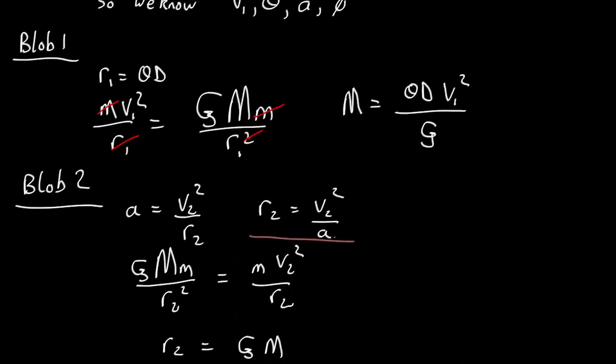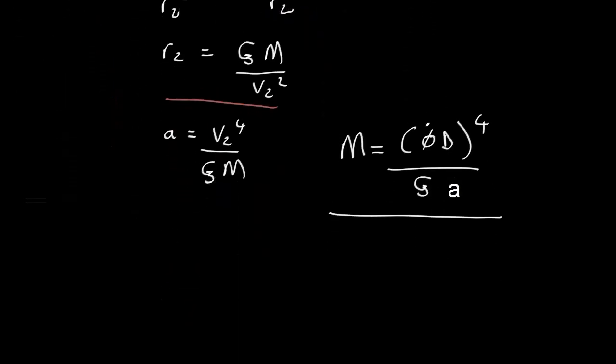So what we can do is set them equal to each other, so we get that theta d v1 squared over G, so we've got from blob 1, is equal to phi dot to the fourth d to the fourth over G times acceleration. So the Gs cancel, one of the ds cancels, and what we find...